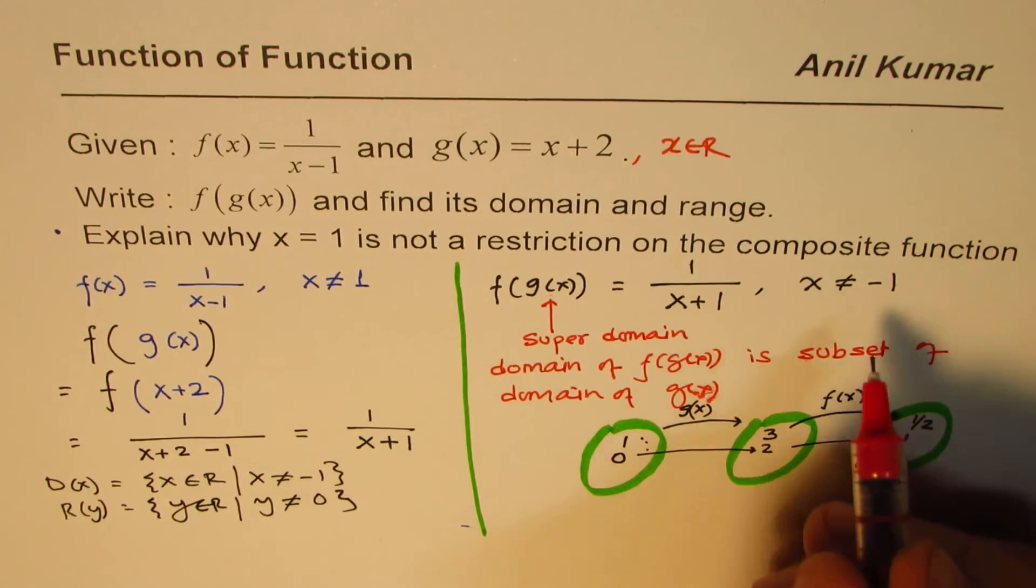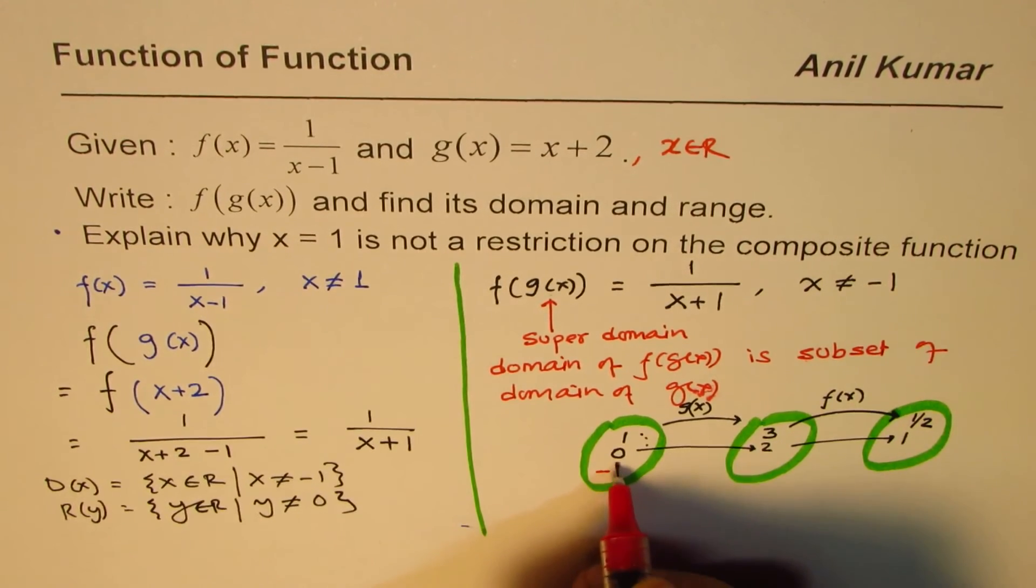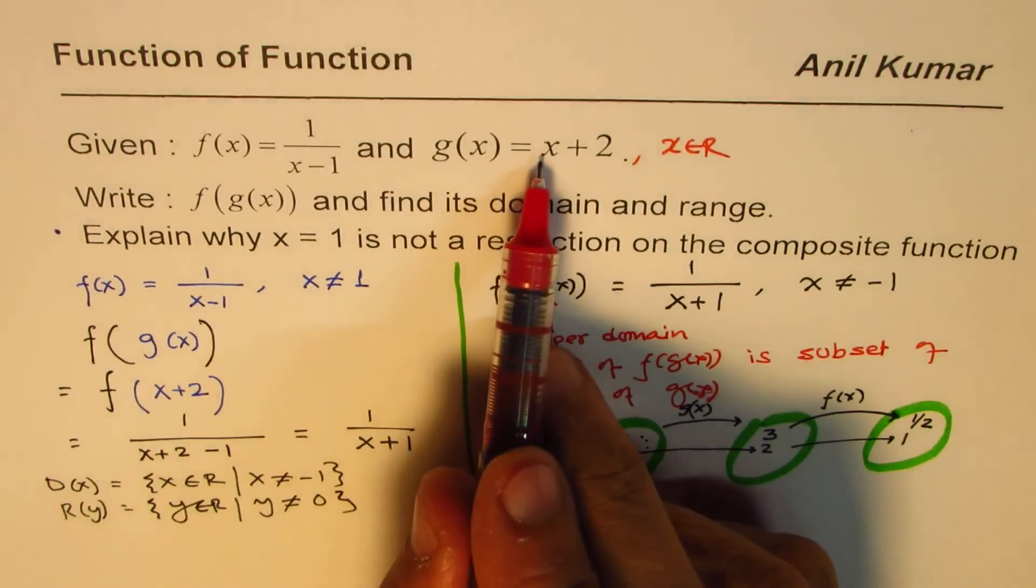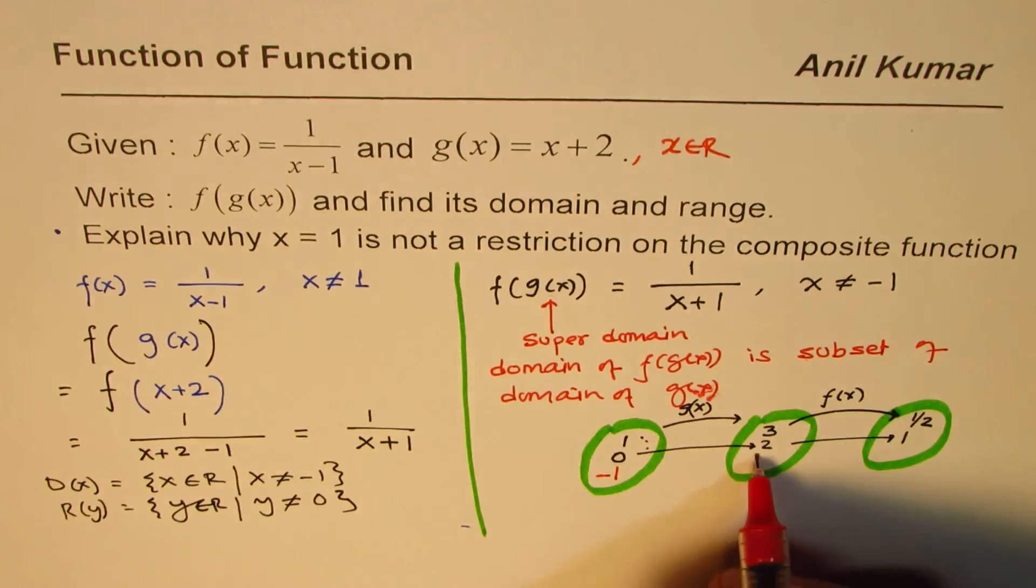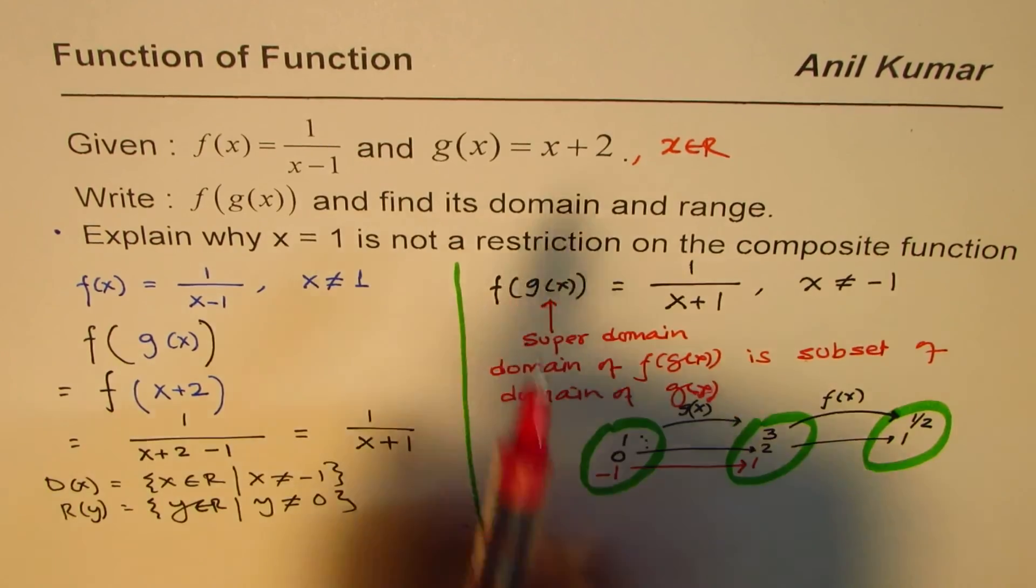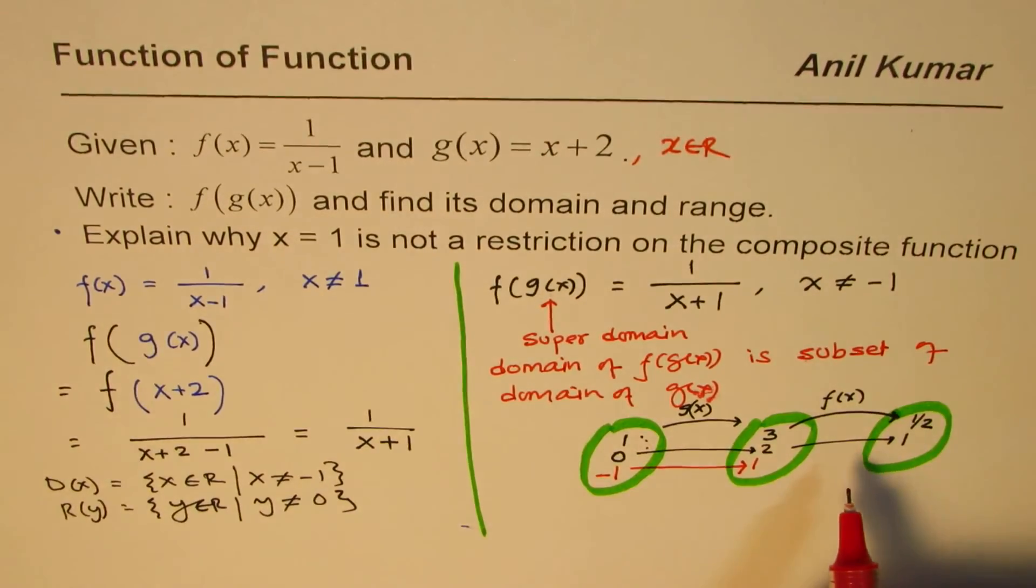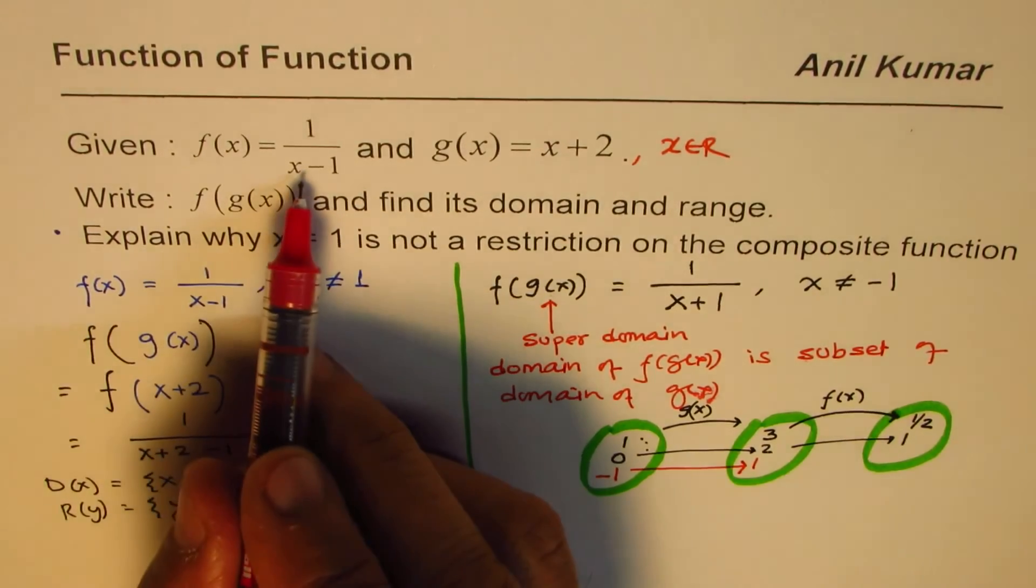What happens if I write -1? Let me write it in red. If I write -1, then -1+2 is 1. This much is okay - g(x) doesn't have any restriction.